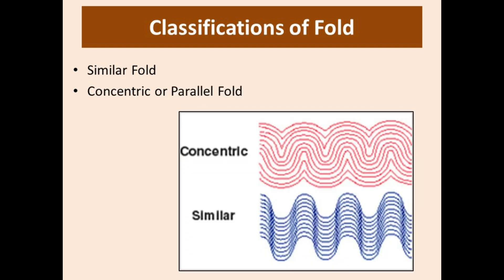Similar folds maintain the same shape throughout the section — each bed is thinner on limbs but thicker near the hinges. The opposite is parallel folds, which maintain constant thickness and the center of curvature is the same. In parallel folds, anticlines become sharper downward but broader upward, and synclines behave inversely.